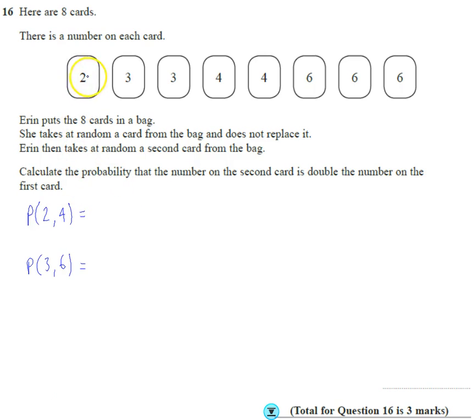So the probability of pulling out, well there's eight cards, so the probability of pulling out two is one eighth, multiplied by the probability of pulling out four. Well there's two fours, but now if we take one card out, two's got one out, there's going to be seven cards left in there. So it's one eighth times two sevenths, which gives us two over fifty-six. Remember you multiply across the top, multiply across the bottom.